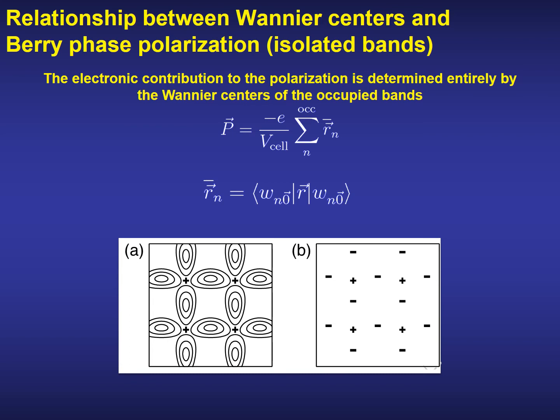The second use of the Wannier functions comes from the relationship between the Wannier centers and the modern theory of polarization. The center of the Wannier functions can be computed from the diagonal matrix elements of the position operator, and then the electronic contribution to the polarization can be completely determined from them. This operation can be considered as a matching of a distributed charge density to a localized set of classical charges located at the centers of the Wannier functions.